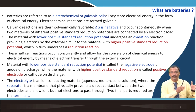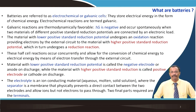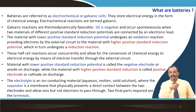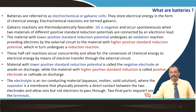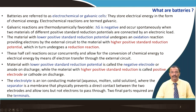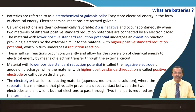The material with lower positive standard reduction potential undergoes an oxidation reaction, providing electrons to the external circuit. The material with higher positive standard reduction potential undergoes a reduction reaction. This was already discussed in Lecture 1 — remember zinc and copper. Zinc is oxidized, throwing electrons to the external circuit, and at the copper electrode, copper ions from solution are reduced and electrodeposited. These half-cell reactions occur concurrently, allowing for the conversion of chemical energy to electrical energy.